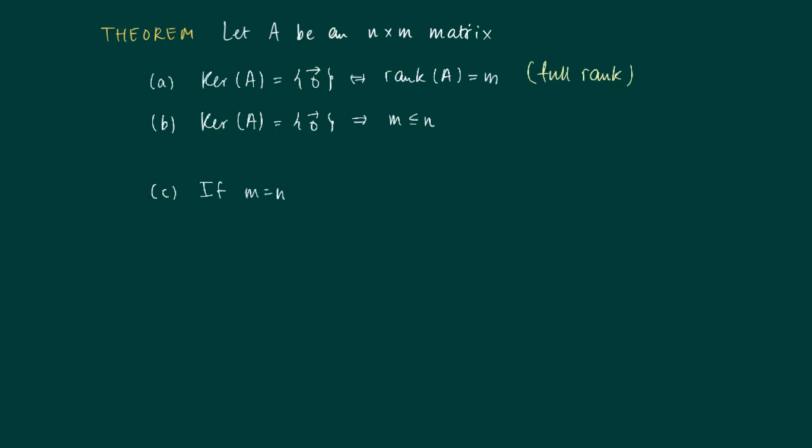If we have just as many columns as rows, then the kernel of A is the zero element if and only if A is invertible.